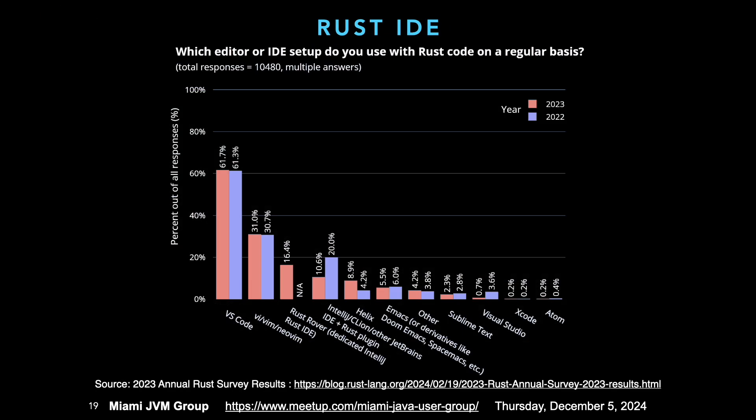In terms of the Rust ecosystem, the IDE of choice is VS Code — it's definitely used the most. A new IDE called Rust Rover came out this year from JetBrains, the same people that make IntelliJ. It's too early to tell what market share that has, but right now pretty much all demos and content associated with Rust use VS Code.